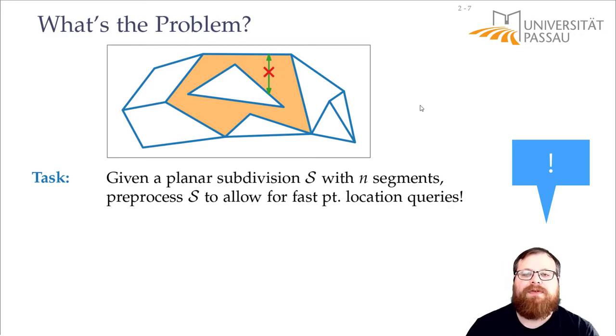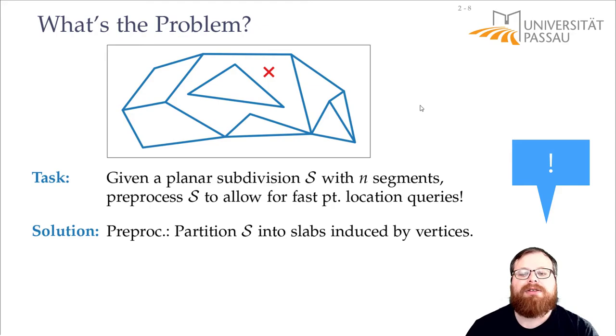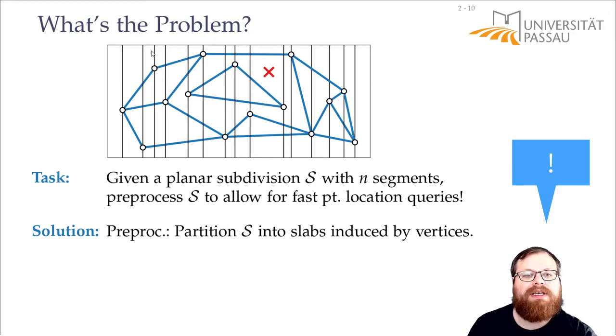The main idea we can use is we first divide it into slabs. So we partition it into slabs induced by the vertices. What are the vertices? That's the endpoints of the segments. And we can find slabs by just placing a vertical line through all of these vertices. Like this. Now we have all of these vertical slabs which are all just rectangles.